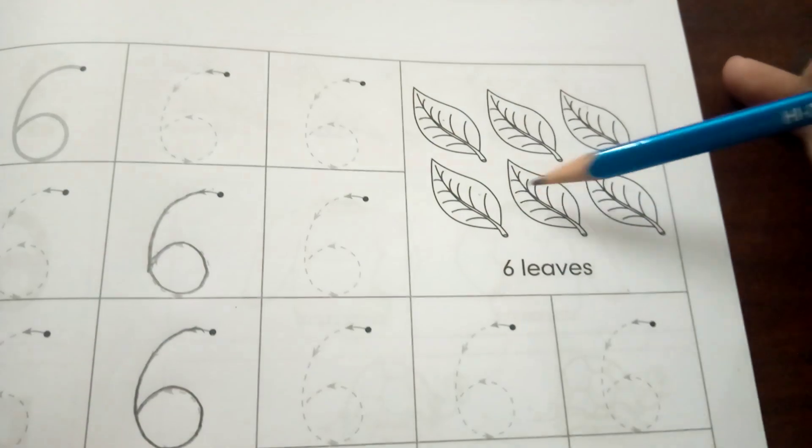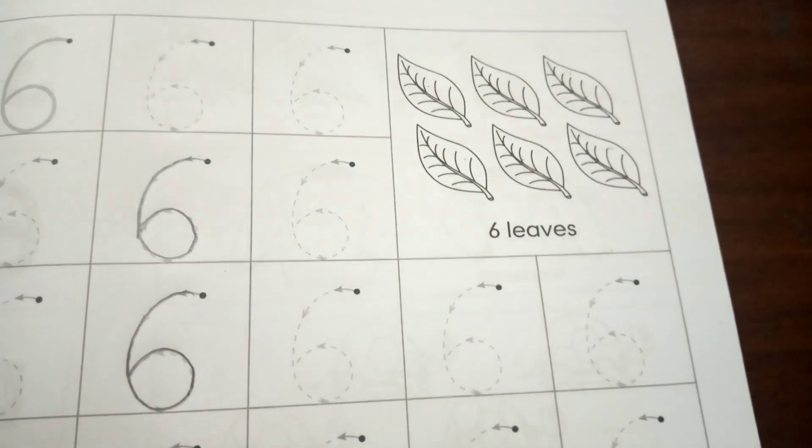These are six leaves - one, two, three, four, five, six. You can do green color in the leaves.